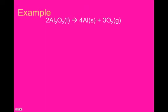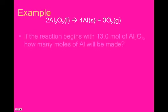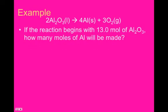So, this will be the reaction that we work with throughout this entire set of notes, so I'll go ahead and write it down somewhere so that you can see it. If the reaction begins with 13 moles of Al2O3, how many moles of aluminum will be made?